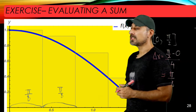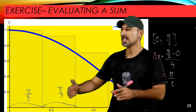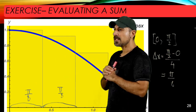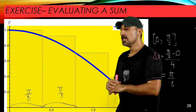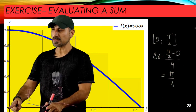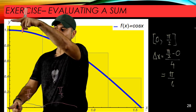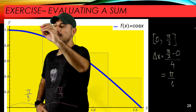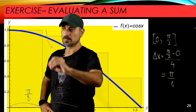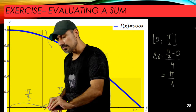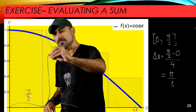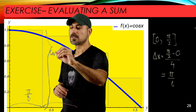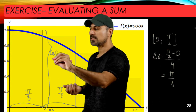All we're going to do here is evaluate the function at the left endpoints of each subinterval — these are going to be the heights of the rectangles. For example, for the first subinterval, the function value is going to be cosine of zero. This height here is cosine zero, which is exactly equal to one.